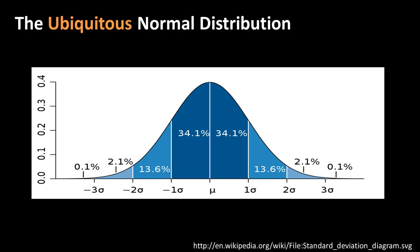The normal distribution has a mean mu and a standard deviation sigma. A very important property is that 68.2% of the values will be within 1 sigma of the mean. So if the mean is 100 and sigma is 10, you'll find 68.2% of the values between 90 and 110 — that is, from mu minus 1 sigma to mu plus 1 sigma.